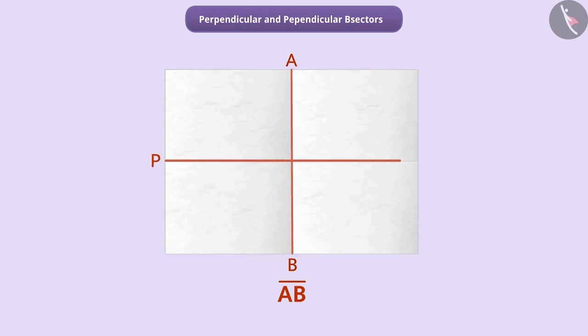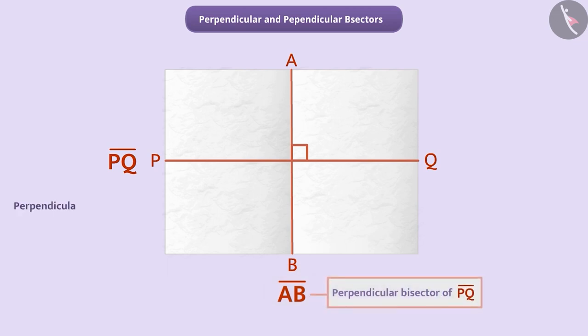As you can see, the two line segments are mutually perpendicular. Also, they pass through each other's midpoint. Therefore, line segment AB is perpendicular bisector of line segment PQ. Similarly, line segment PQ is the perpendicular bisector of line segment AB.